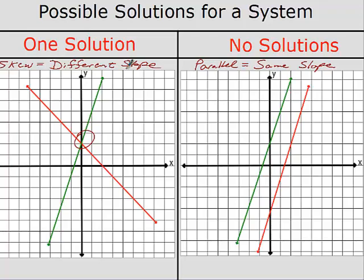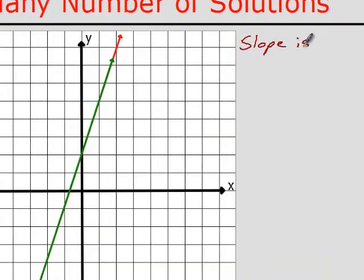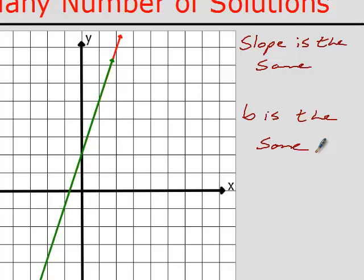Here's the case of infinitely many solutions. What do you notice about the two lines? They intersect forever — the phrase is 'co-existent,' meaning they are the exact same line. For this case, what do we know? The slope is the same AND the y-intercept (B) is the same. So to summarize: if slopes don't match, one solution; if slopes are equal but B is different, no solutions (parallel lines); if slopes are the same and B is the same, infinitely many solutions (co-existent lines).